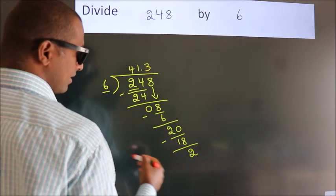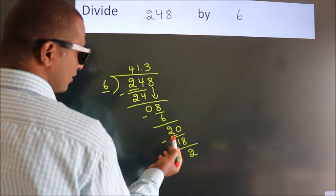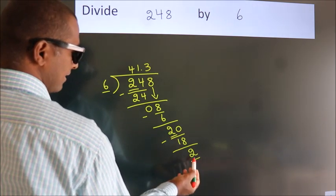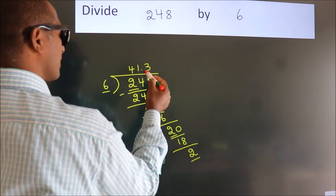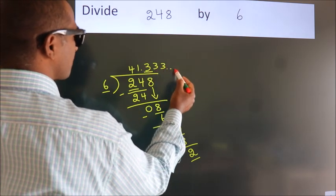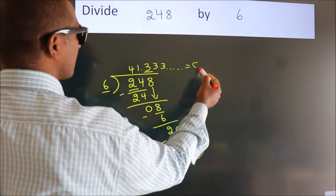Now you observe we had 2 here and we got 2 again. That means this number keeps on repeating. So this is our quotient.